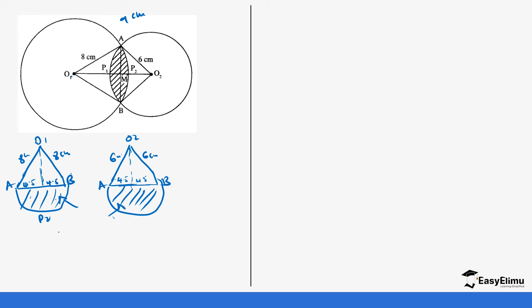You get the height by saying for this sector, it's going to be x squared plus 4.5 squared equals 8 squared. So it's the same as x squared equals 8 squared minus 4.5 squared. So it's going to be x squared equals 64 minus 20.25, which gives us 6.25.